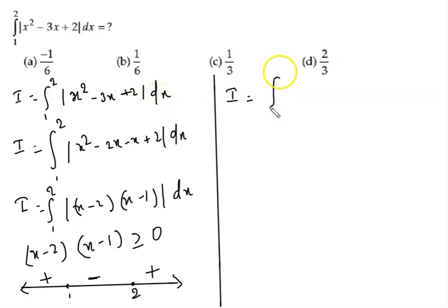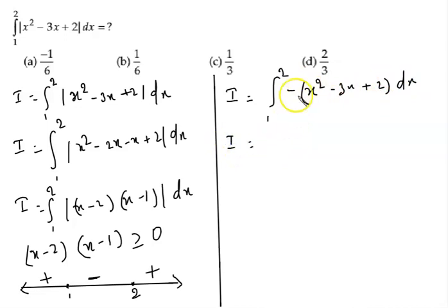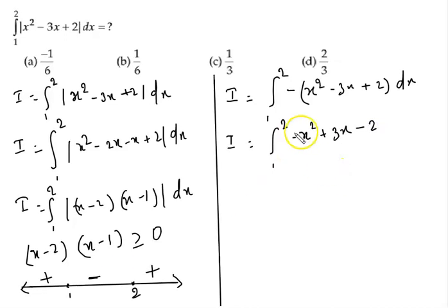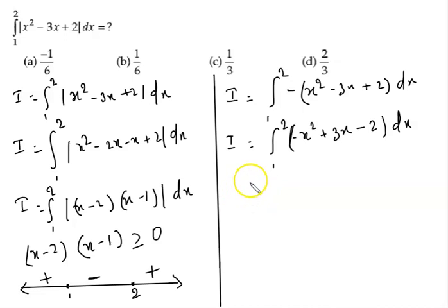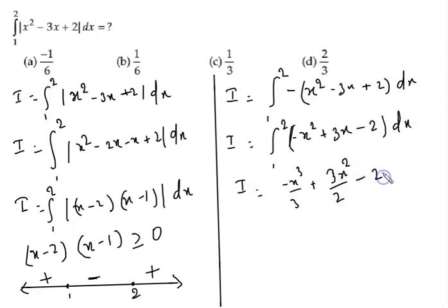Since the function is negative on [1, 2], after opening the modulus we write: I = integral from 1 to 2 of -(x² - 3x + 2) dx. After multiplying by minus one, this becomes the integral of (-x² + 3x - 2) dx. Now integrating: we get -x³/3 + 3x²/2 - 2x, with limit 1 to 2.